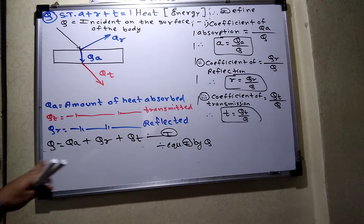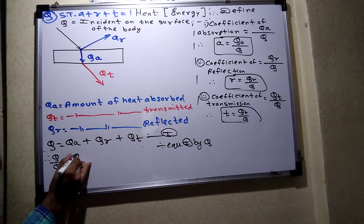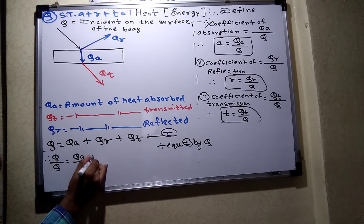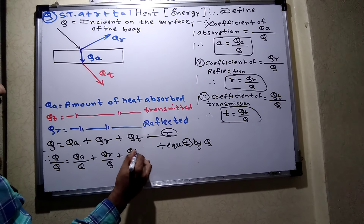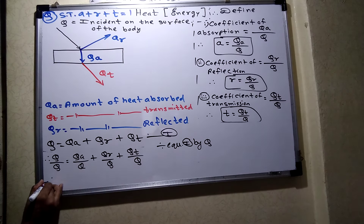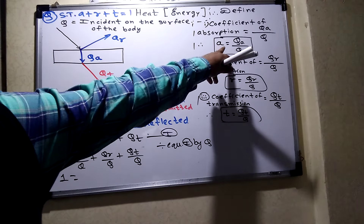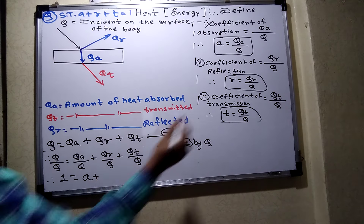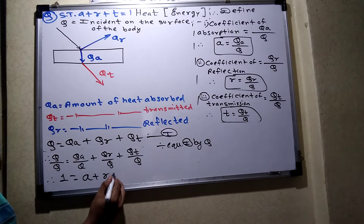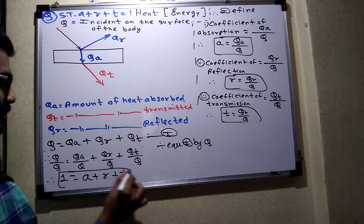Dividing equation one by Q: Q upon Q equals Qa upon Q plus Qr upon Q plus Qt upon Q. Q upon Q is one. Qa upon Q is 'a', Qr upon Q is 'r', and Qt upon Q is 't'. Hence proved.